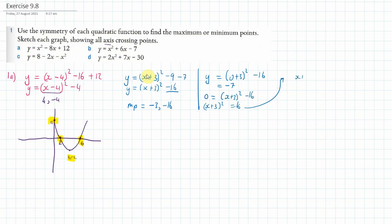So x plus 3 equals plus or minus the square root of 16, which is 4. Therefore x equals minus 3 plus or minus 4, giving an x-coordinate of minus 7.